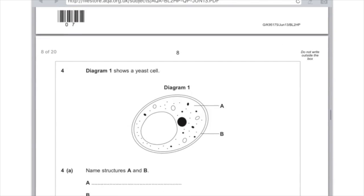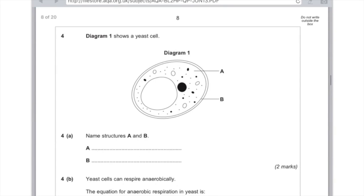Question four. Diagram one shows a yeast cell. Name structures A and B. Great if you have learnt the structure of a yeast cell and a fungus cell, but if you haven't, don't panic here. Just put what you would normally do, considering it was an animal or plant cell. And you can see that A is the cytoplasm, because it's the jelly of the cell, and that B is the cell membrane, because outside of that is the cell wall.